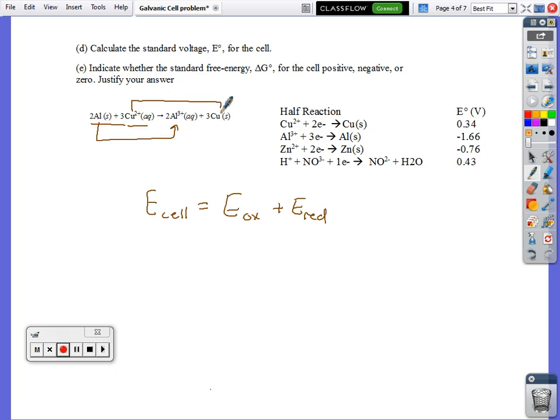aluminum is going to aluminum three plus, copper two plus is going to copper. Copper is being reduced, that's this half right here. The aluminum is being oxidized, that's this one reversed. So if we flip the aluminum around to make it oxidized, we have to change the sign of the potential. In this case, it's negative, we flip it to be positive. If it was positive, you'd flip it to be negative.